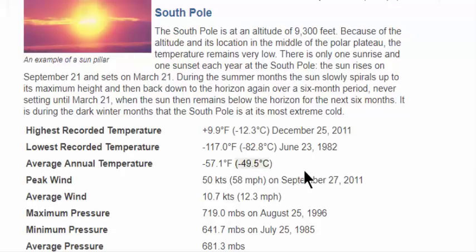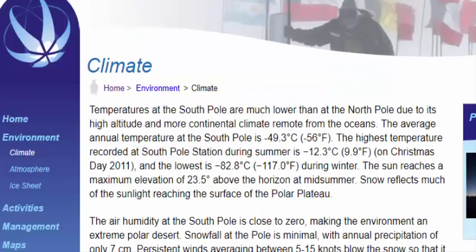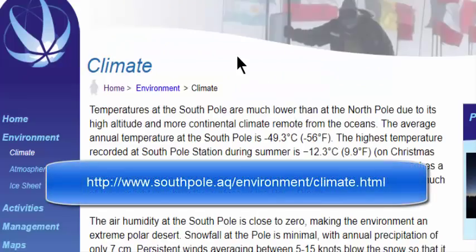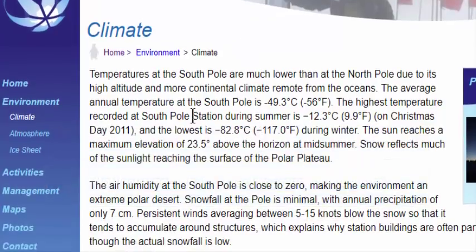You can't say that's a bad one. Well, let's recheck it. Check another site. South Pole AQ Environment Climate. How about this? What's that? The average annual temperature at the South Pole is minus 49.3. Not bad, eh?